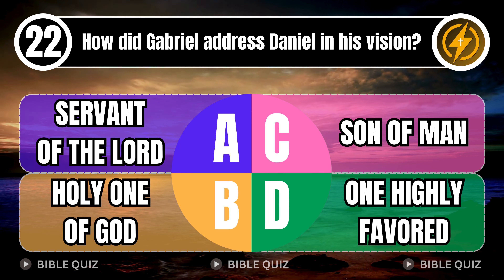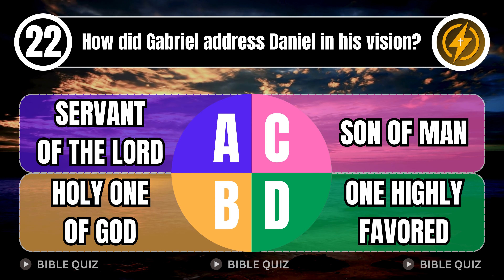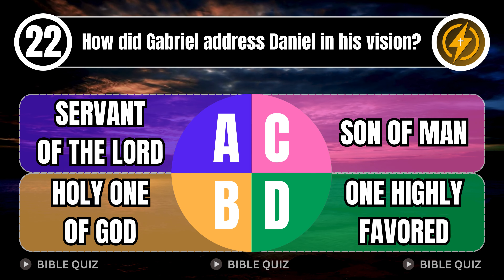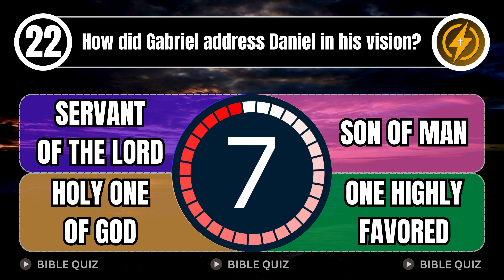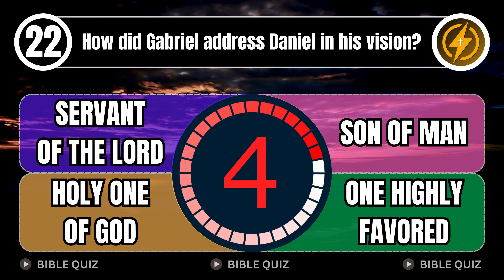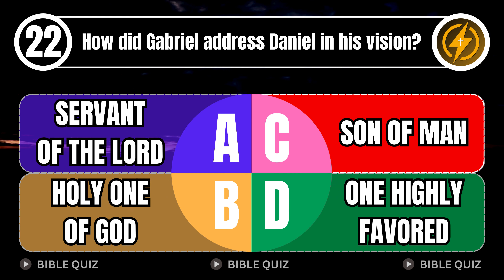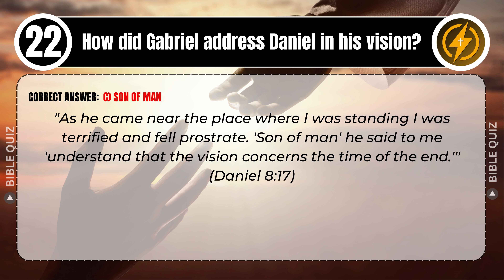Question 22: How did Gabriel address Daniel in his vision? A. Servant of the Lord. B. Holy One of God. C. Son of Man. D. One Highly Favored. Correct answer: C. Son of Man. Explaining the Bible — as he came near the place where I was standing, I was terrified and fell prostrate. 'Son of Man,' he said to me, 'understand that the vision concerns the time of the end.' Daniel 8 verse 17.